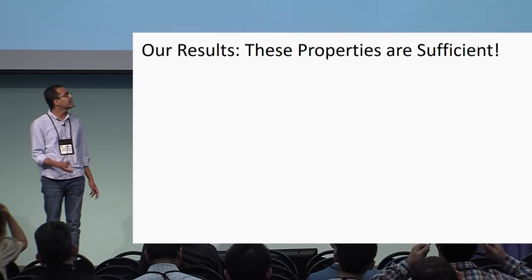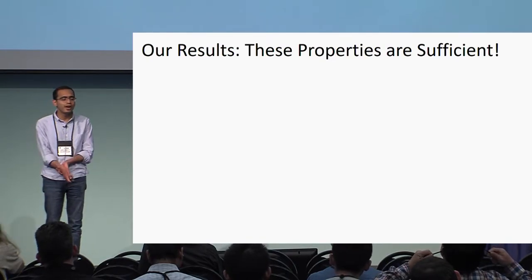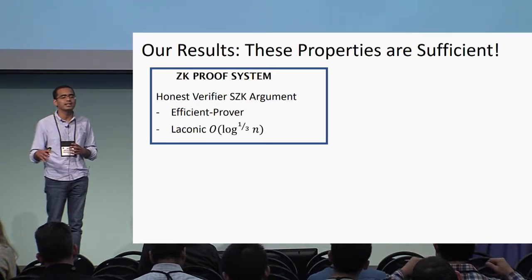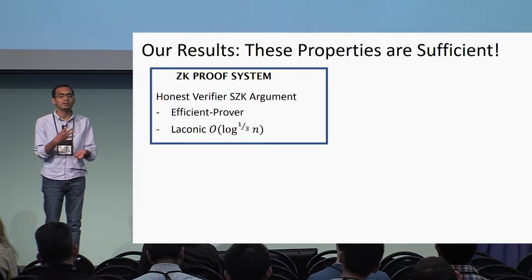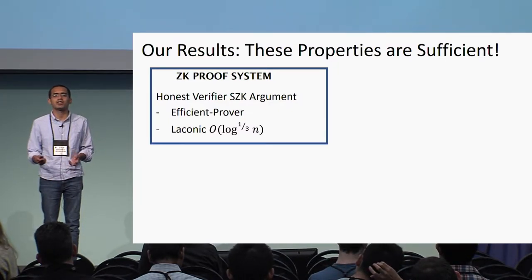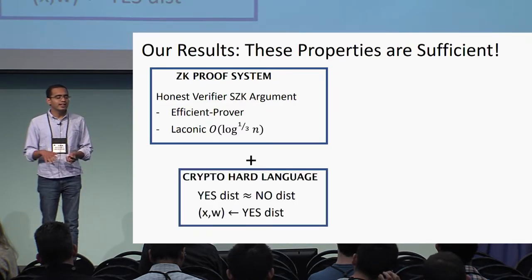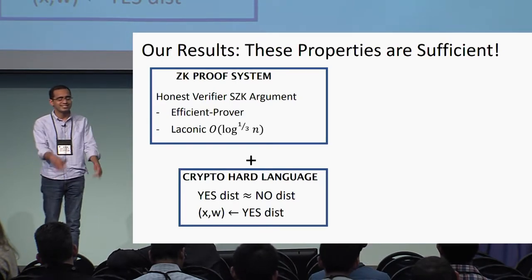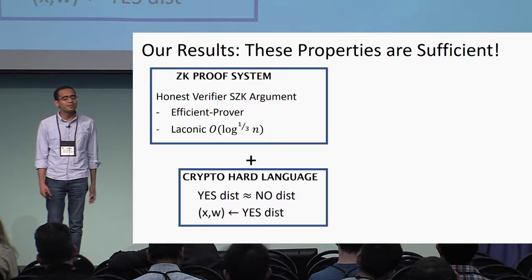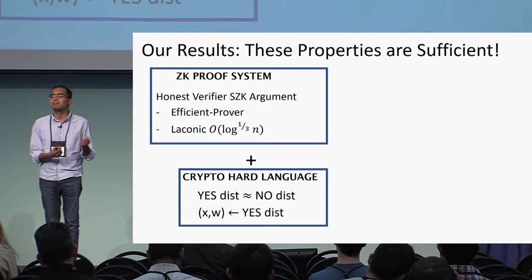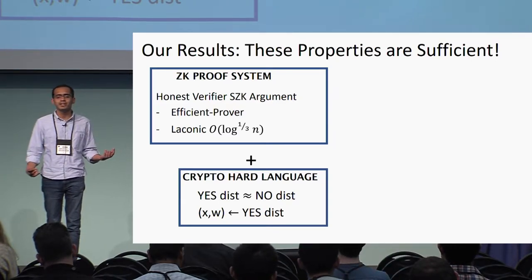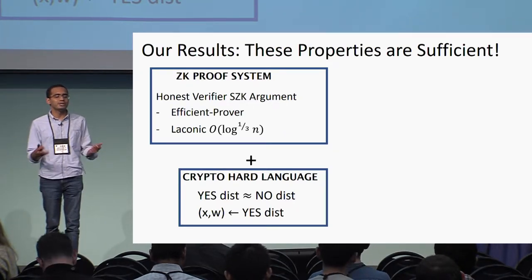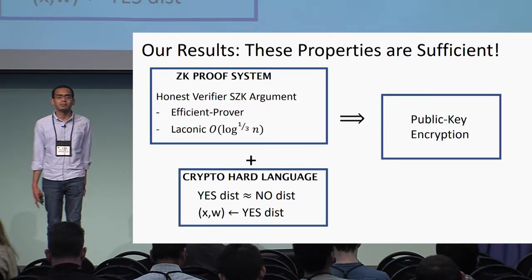So what are the properties this scheme has? First, it's an honest-verifier statistical zero-knowledge proof. The verifier actually learns nothing here because all the verifier does is send a number knowing whether it's a square or not, and gets back an answer which says the same thing. Second, we know that we can sample hard instances: you take two primes, multiply them together, and get these instances. Third, the prover is efficient — when given the factorization of the integer n, the prover can answer these queries efficiently. And finally, the prover talks very little — the prover is only communicating one bit: is it a square or not? In this paper, we show that these four properties are sufficient to construct public key encryption.